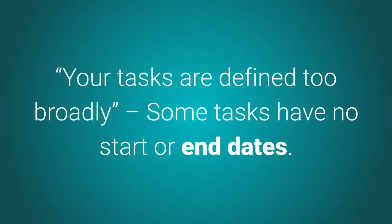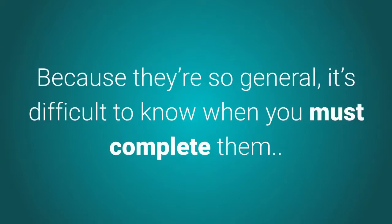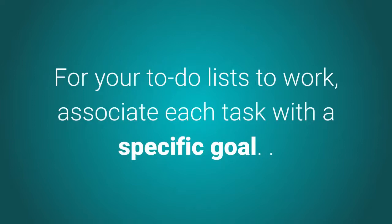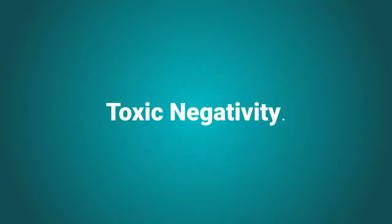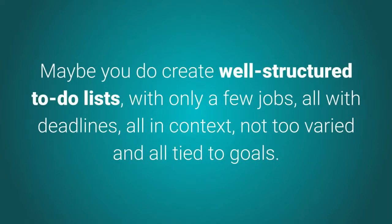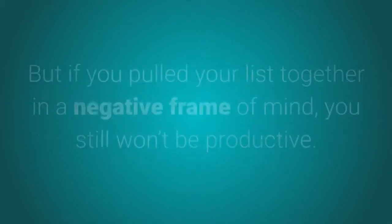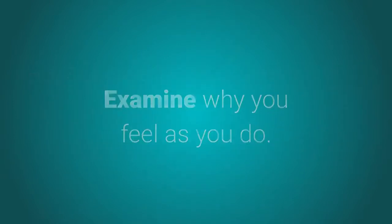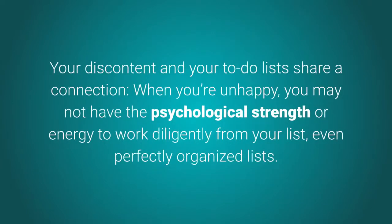The seventh reason: your tasks are defined too broadly. Some tasks have no start or end dates because they're so general it's difficult to know when you must complete them. The eighth reason: your tasks are not attached to specific goals. People set goals so they can achieve their stated purposes — for example, adding oil to the car so it will run, or paying taxes on time to avoid penalties. For your to-do lists to work, associate each task with a specific goal. Finally, toxic negativity: even a well-structured list won't make you productive if you created it in a negative frame of mind, as discontent depletes the psychological strength and energy needed to work diligently.